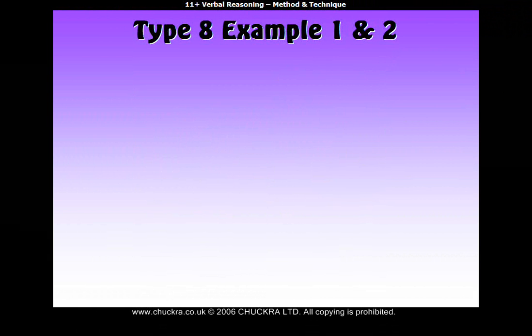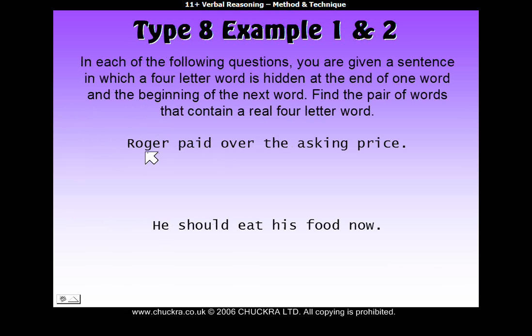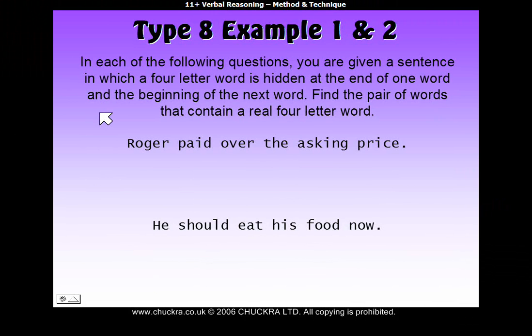Let's have a look at type 8. There are two examples on this page. The instructions say in each of the following questions you are given a sentence in which a four-letter word is hidden at the end of one word and the beginning of the next word. Find the pair of words that contain a real four-letter word.